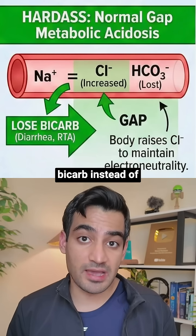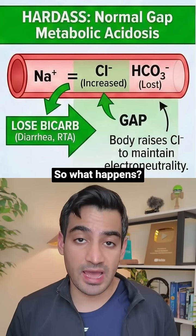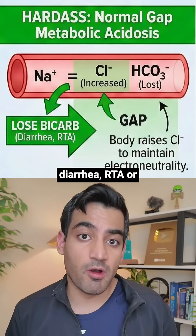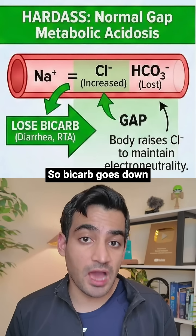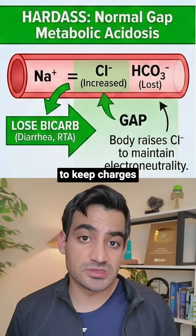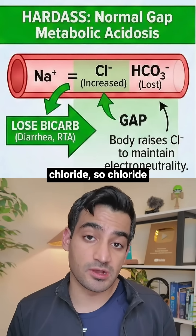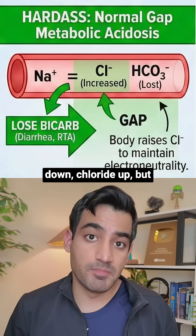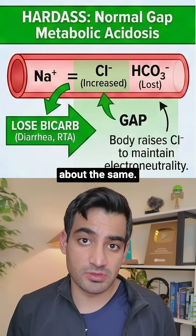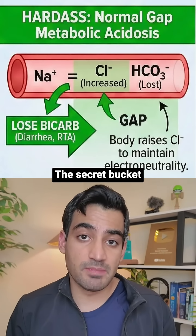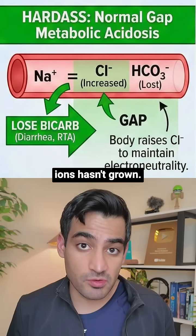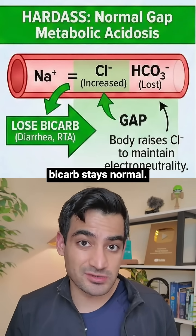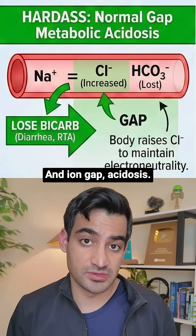Here, you're losing bicarb instead of adding new acid. Bicarb is lost from the body through diarrhea, RTA, or other mechanisms, so bicarb goes down. To keep charges balanced, the body brings in more chloride, so chloride goes up. Bicarb goes down, chloride goes up, but the sum of chloride plus bicarb stays about the same. The secret bucket of unmeasured anions hasn't grown — that means sodium minus chloride plus bicarb stays normal. That's normal anion gap acidosis.